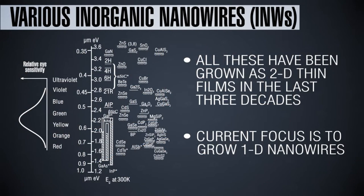The variety of materials that can be grown in the form of nanowires cover the entire electromagnetic spectrum, going from UV to even long infrared wavelength. Or if you look at bandgap, bandgap as low as 0.05 eV to something as high as 3.5 eV.